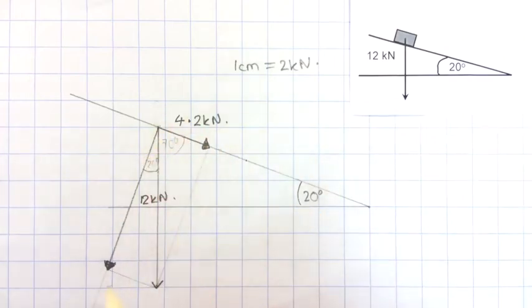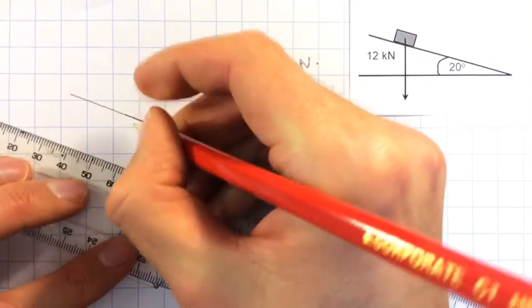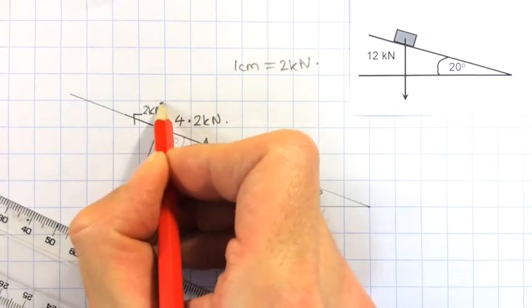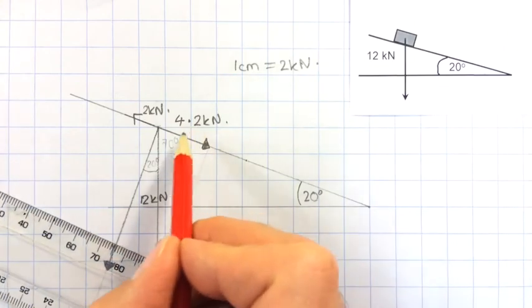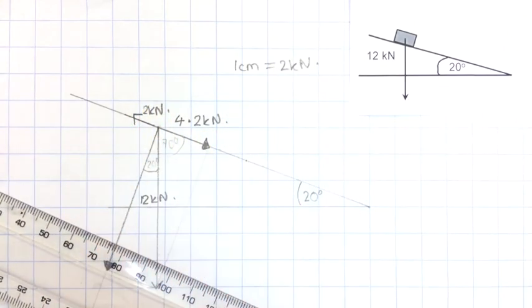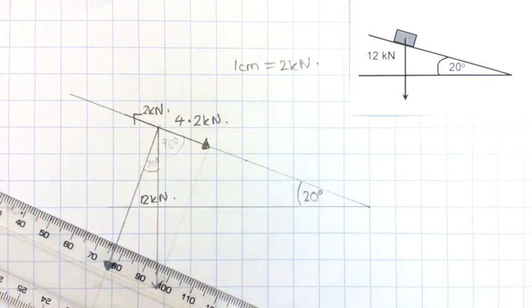It's worth noting that in another question you might be told instead that there was a frictional force of, say, 2 kN acting up the slope. You could then find the resultant force down the slope as the 4.2 kN minus this frictional force and then maybe work out the acceleration of the object down the slope.